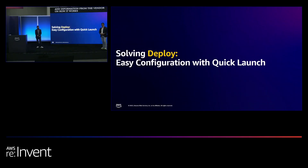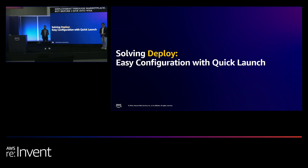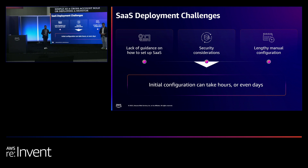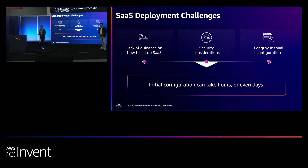Let's talk about SaaS Quick Launch — I'm super excited about this feature. We announced it in the partner keynote yesterday. This feature really simplifies SaaS deployment through Marketplace. Before I dive in, let's take a moment to understand the challenges when deploying a SaaS product. For certain categories like security and monitoring, you might need to deploy resources in your account — something as simple as a cross-account role or deploying a monitoring agent. There's not always clear guidance on how to deploy these resources, and there are security considerations when deploying them manually or using a third-party Terraform module.